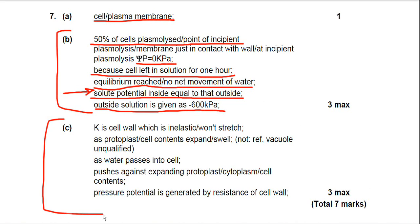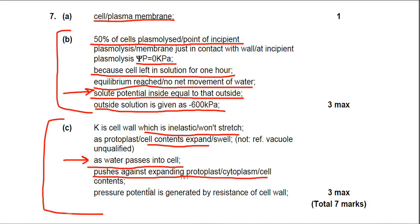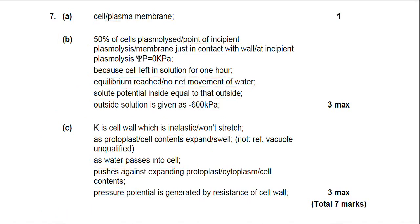Moving on to part C: this is to do with pressure potential inside the cell. The marking points are: the cell wall is inelastic, won't stretch; the cell contents will expand; water moves into the cell — and while the examiner hasn't explicitly required you to mention osmosis, it's good practice to do so. The cell contents push against the cell wall, and the pressure potential is generated by resistance of the cell wall. That's the end of question seven.